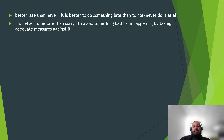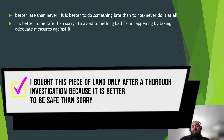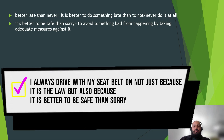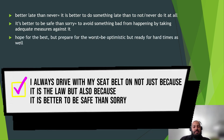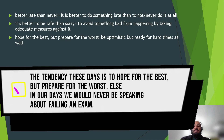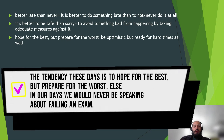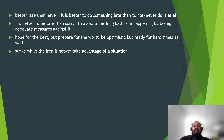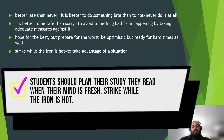'It's better to be safe than sorry' is a popular idiom — avoid something bad before it happens. For example: 'I bought this piece of land only after thorough investigation because it is better to be safe than sorry.' Or: 'I always drive with my seat belt on, not just because it's the law, but because it's better to be safe than sorry.' Then 'hope for the best but prepare for the worst' means being optimistic while also being ready for negative consequences. And 'strike while the iron is hot' means to take advantage of a situation that could change in the future — 'students should read when their mind is fresh in the morning.'